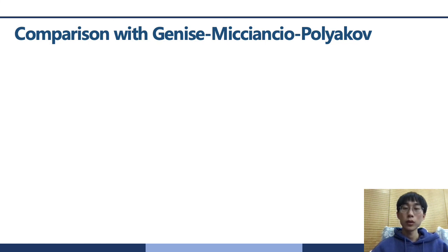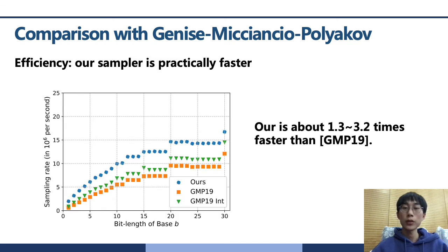More important, our sampler is practically fast. It can be seen in the picture that our sub-Gaussian sampler is greatly faster than the Genise-Micciancio-Polykov improvement in Palisade library. Precisely, our algorithm is about 1.3 to 3.2 times faster than the Palisade implementation of the Genise-Micciancio-Polykov algorithm.